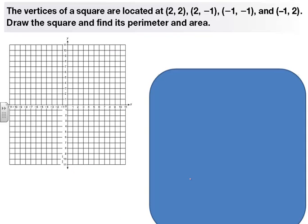Let's see if we can do this one. It says the vertices of a square are located at (2, 2), (2, -1), (-1, -1), and (-1, 2). Draw the square and find its perimeter and area. So let's do this together. We're going to start with our first one with our 2 and 2. So we're going to come over 1, 2, and come up 2 and put a dot right there.